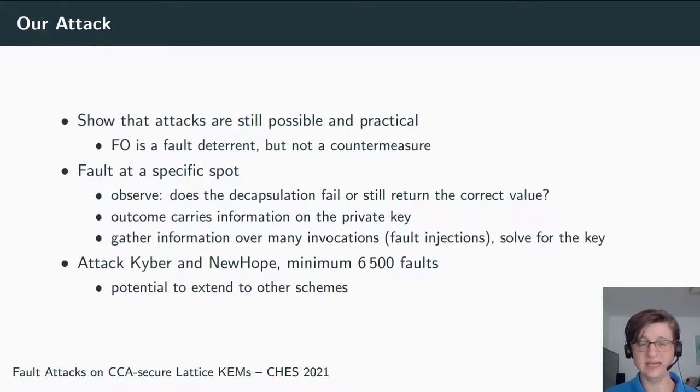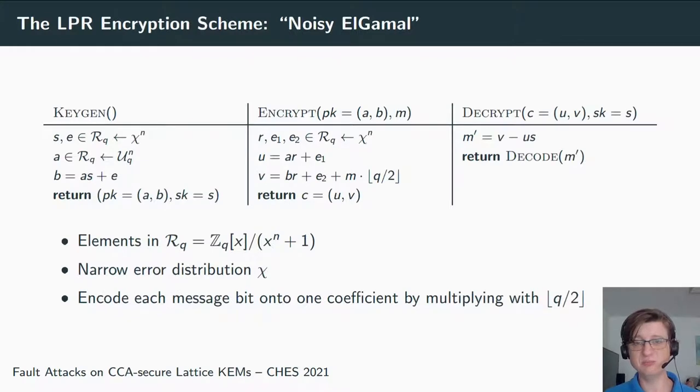The outcome—the information: does it fail or not?—carries information on the private key. We gather this information over many invocations, over many faulted decapsulations, and we finally solve for the key. We attack Kyber and NewHope, and we have to fault at least 6,500 decapsulations. But we also say that there is a high probability that such attacks can also be extended to other similar schemes.